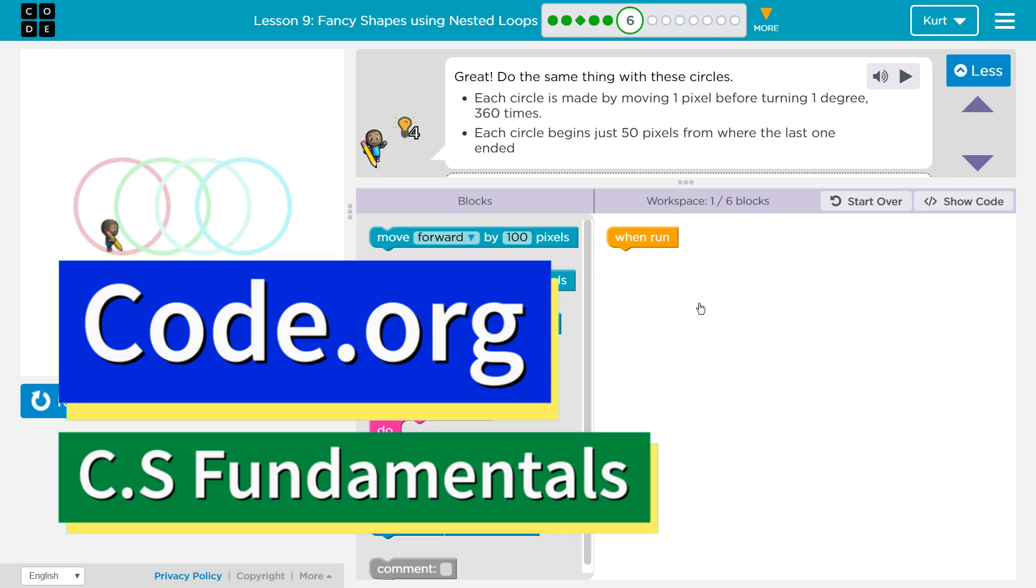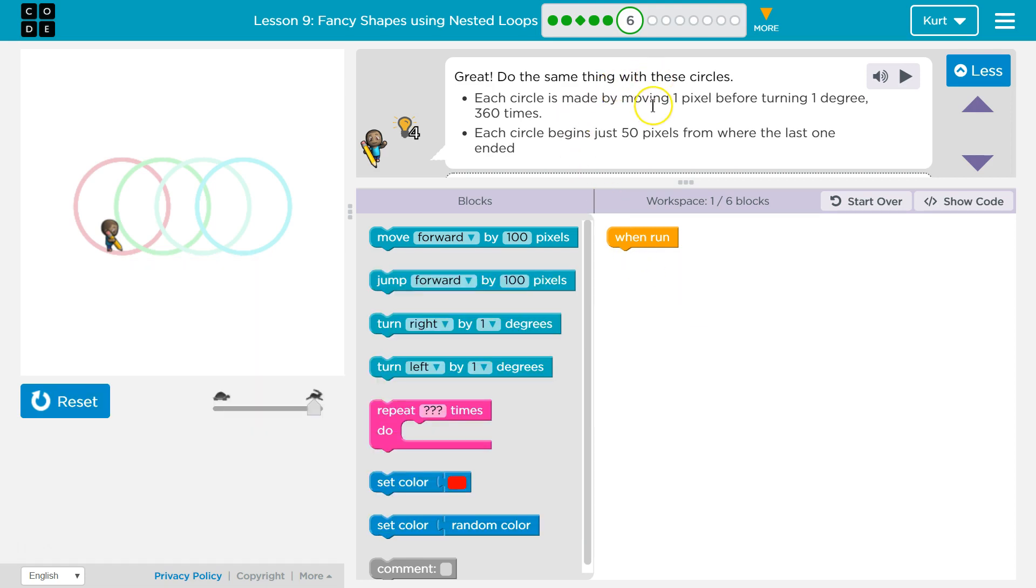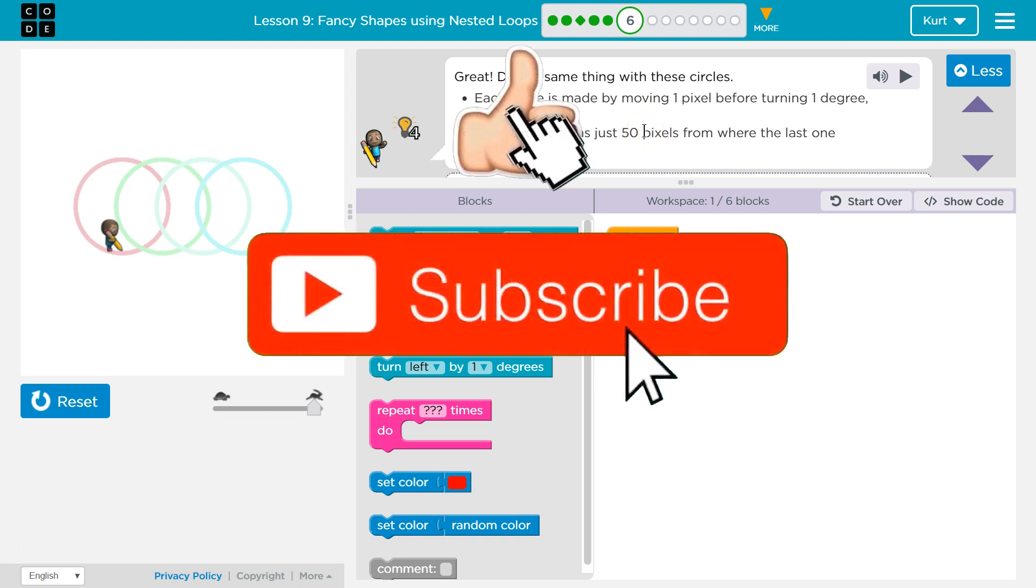This is code.org. Great. Do the same thing with these circles. Each circle is made by moving one pixel before turning one degree 360 times. Each circle begins just 60 pixels from where the last one ended.